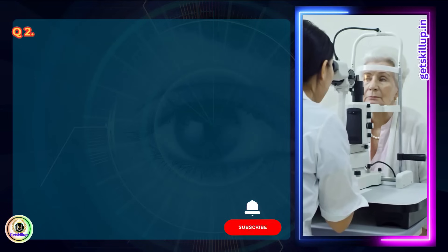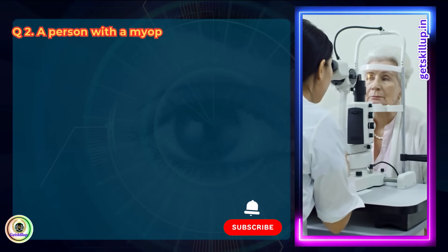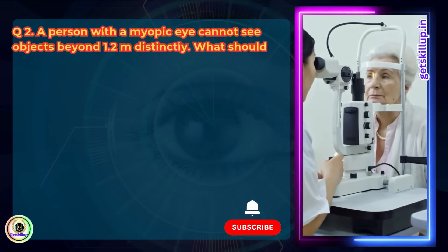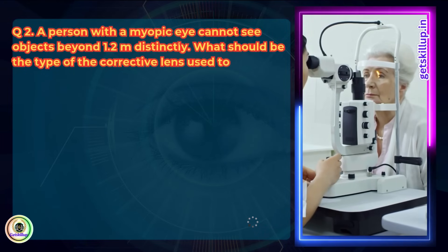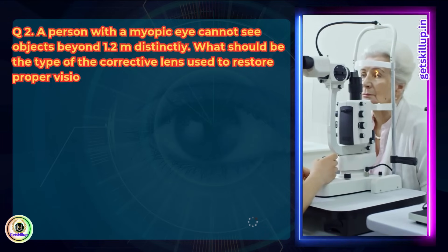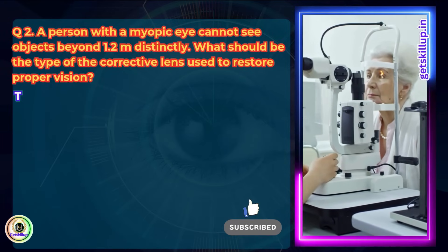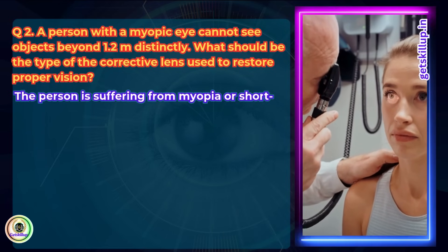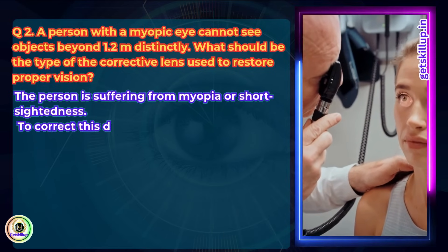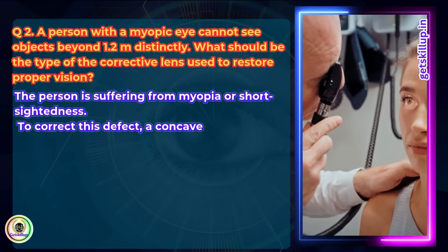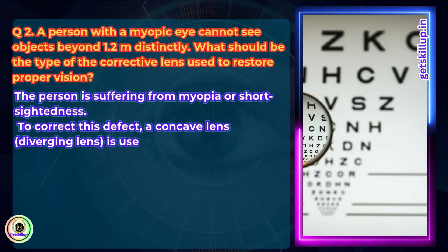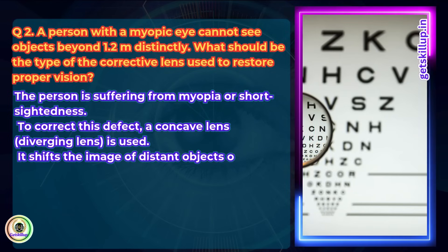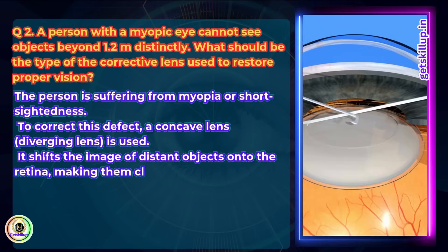Question 2: A person with a myopic eye cannot see objects beyond 1.2 meters distinctly. What should be the type of corrective lens used to restore proper vision? The person is suffering from myopia, or short-sightedness. To correct this defect, a concave lens is used. It shifts the image of a distant object onto the retina, making them clear.